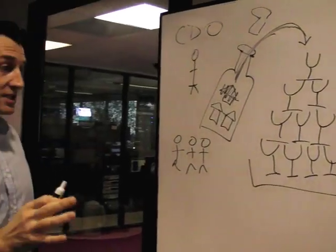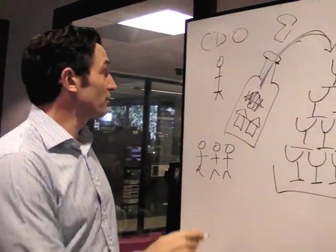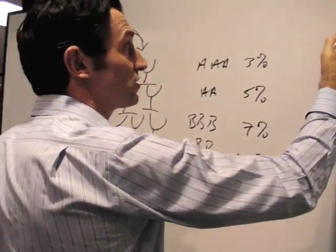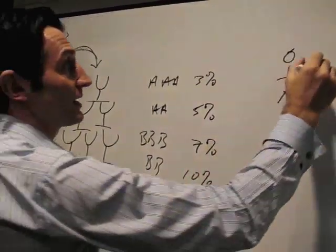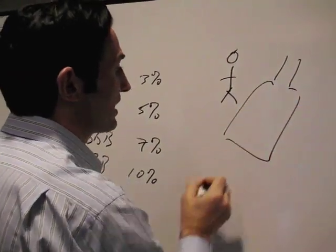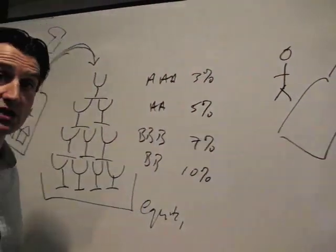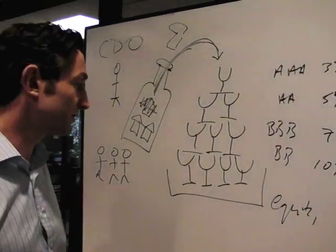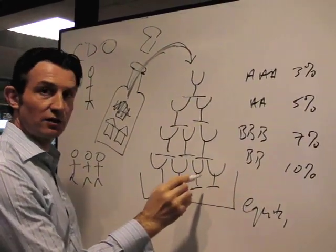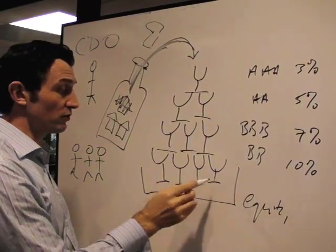Now where this situation becomes complicated is where you have another asset manager who decides to go out and build a champagne bottle. But instead of filling it with mortgages, what he decided to do was fill it with these mortgage-backed securities from the CDO.